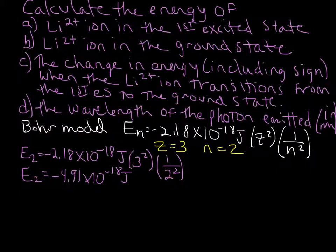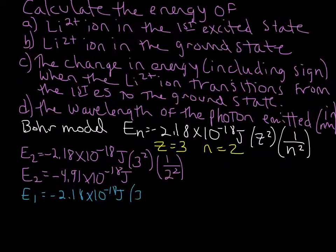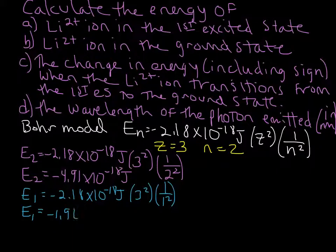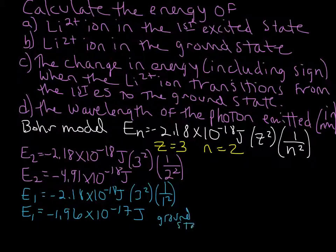Let's calculate E1. E1 is going to be negative 2.18 times 10 to the negative 18 joules, multiplied by the same 3 squared, and then 1 over 1 squared, which of course is still just going to equal 1. If we multiply that together, we end up with negative 1.96 times 10 to the negative 17 joules. So that's our ground state — that's the lowest energy state.